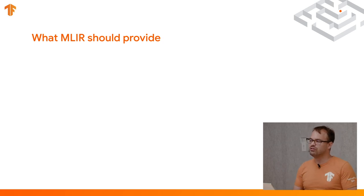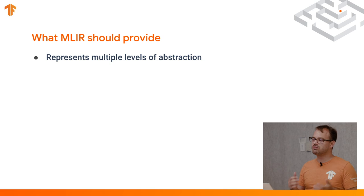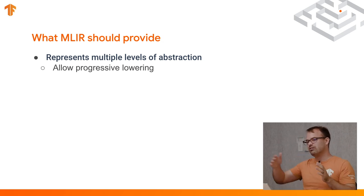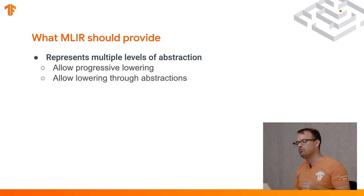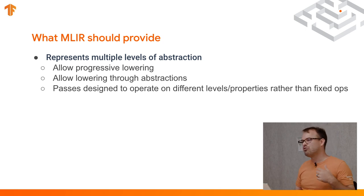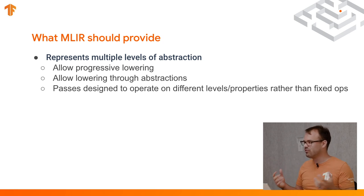So what should MLIR provide? Well, it should represent multiple levels of abstraction. We should allow progressive lowering — within a given function, having a progressive set of lowerings that get you to the destination. It should not be these big jumps on two separate data structures; we want to be able to lower through multiple different abstractions. This also means that the passes need to be designed to operate on these different levels and properties rather than looking at fixed ops. This is especially essential for TensorFlow, which has an open ecosystem with ops being added very regularly.